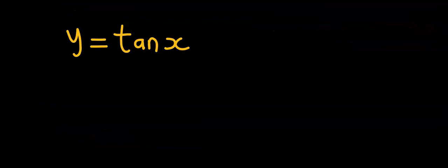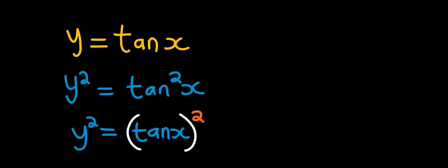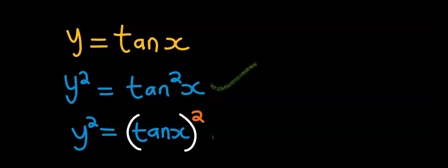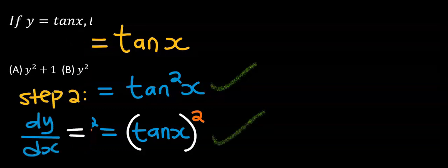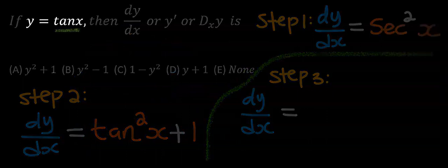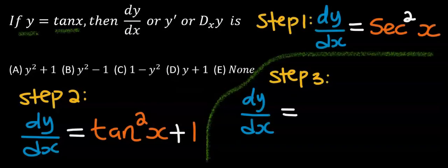Subsequently, if y is equal to tan x, then y squared is equal to tan squared x. And this is the same as this. Both are the same. In step number 3, instead of tan x, I can now replace it with y.